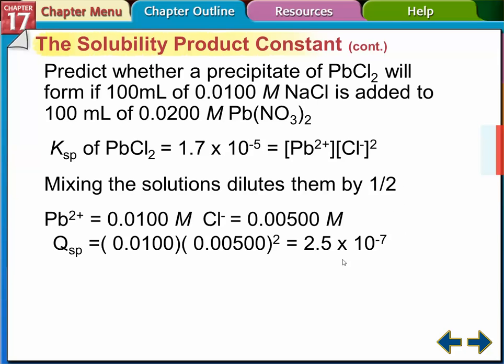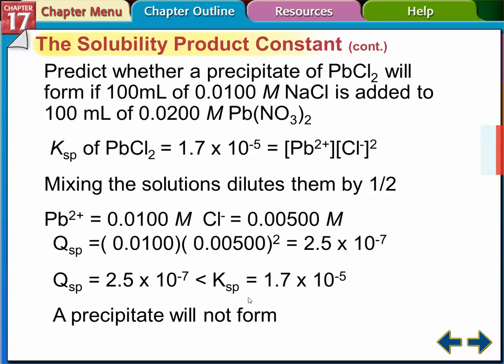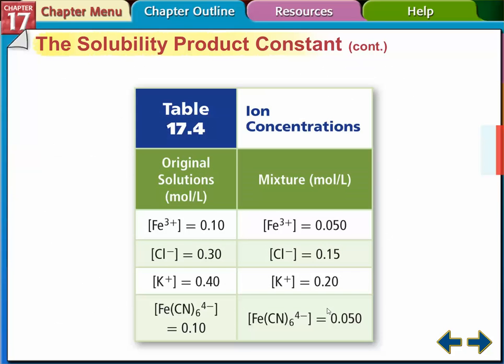So the Qsp is just these two numbers multiplied. We're going to put the squared there for the chlorine concentration. So we get this. So comparing it to this number, what do we find out? The Qsp is less than the Ksp. So that means it's unsaturated and the precipitate will not form. All the lead chloride will dissolve in this solution that we made, okay?